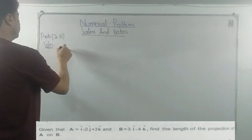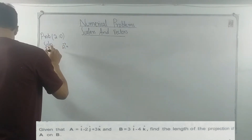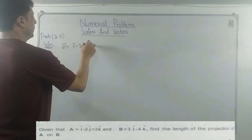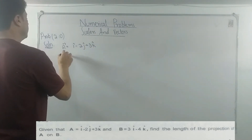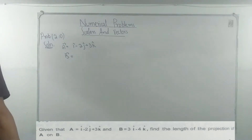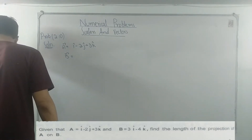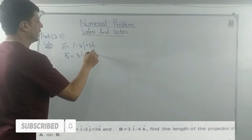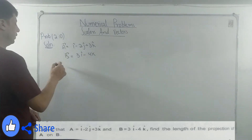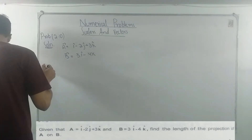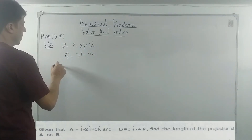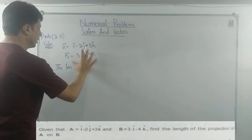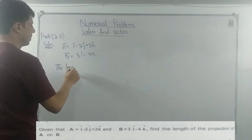Let's solve this problem on the whiteboard. Vector a is equal to i minus 2j plus 3k, and vector b is equal to 3i minus 4k. We need to find the length of the projection of a on b.